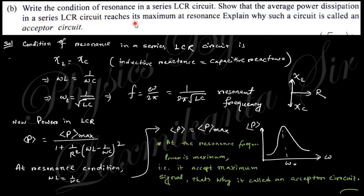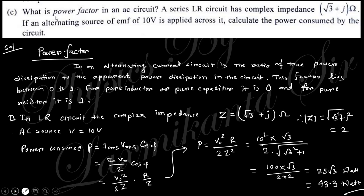Next: write the condition for resonance in an LCR circuit so that the average power dissipated is maximum, and explain why such a circuit is called an acceptor circuit. The condition for resonance is χL = χC, that is inductive reactance equals capacitive reactance. Since these two are opposite and cancel out, only the resistance remains, so maximum power is received at resonance. At this resonant frequency the circuit accepts the maximum signal, which is why it is called an acceptor circuit.